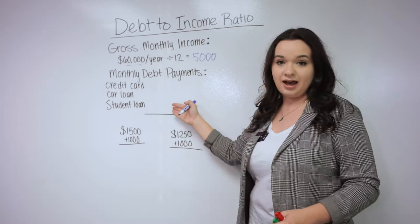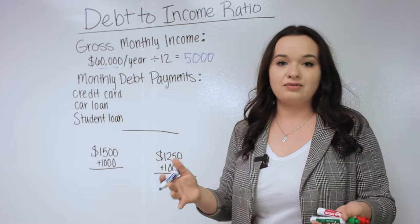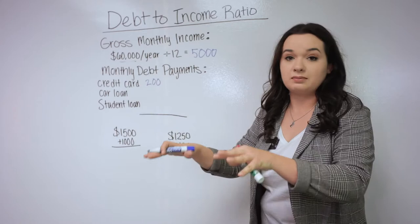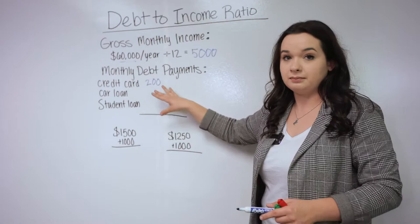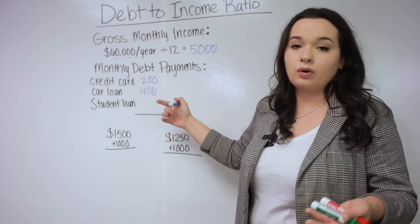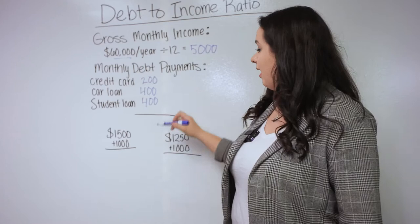For example, let's say I pay $200 every month towards my credit card. That's my minimum due each month on my balance. Even if I'm contributing more, like $400 a month to pay the balance down, we're just using the required minimum in this section. For a car loan, let's put $400 there. And for a student loan, let's say that's $400 as well. We add up these debt payments, which gives us $1,000.